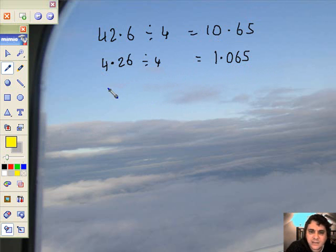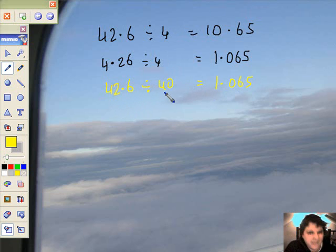I could have said, leave this all alone, 42.6, but divided by 10 times as much underneath. 40. All right, that will still give me 1.065. Look at it carefully. 42, yeah, divided by 40. 40 divided by 40 is about 1. So I know I've got it right.